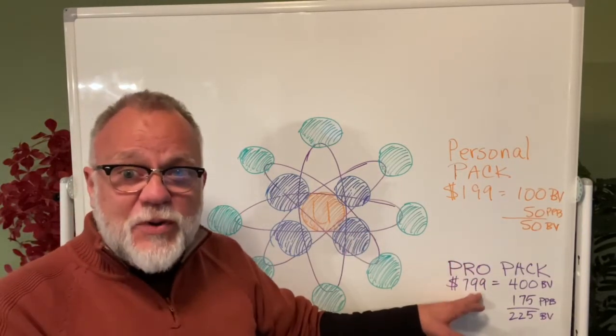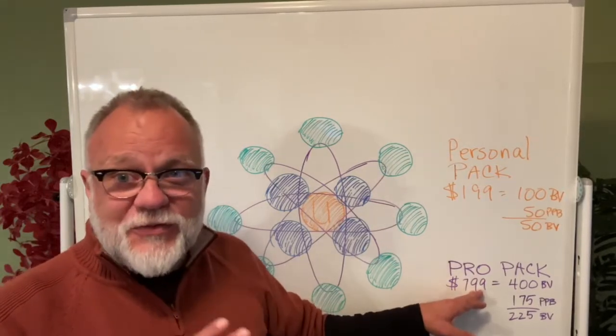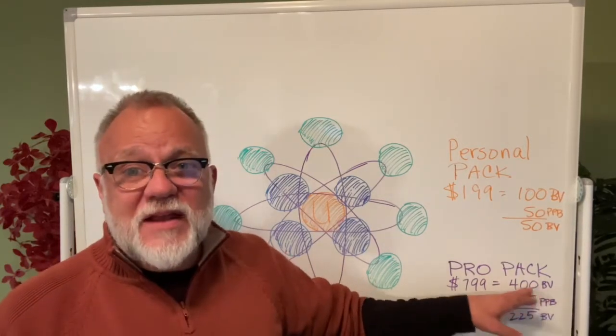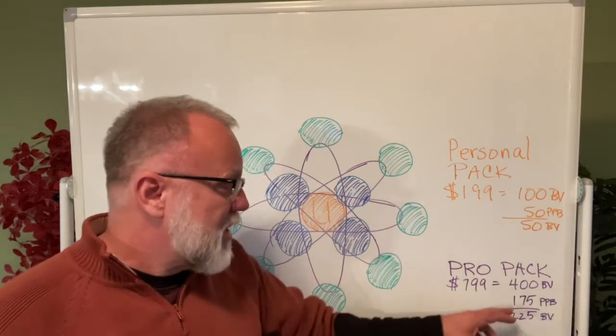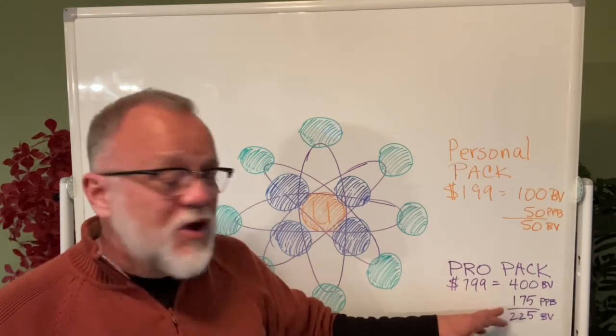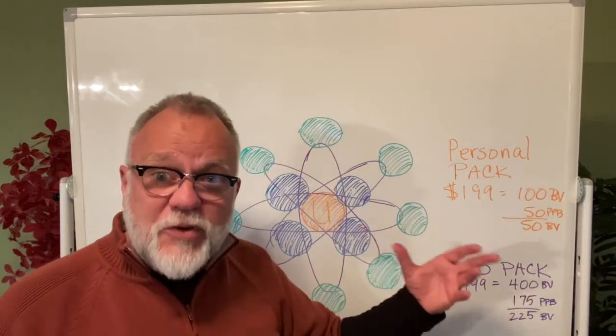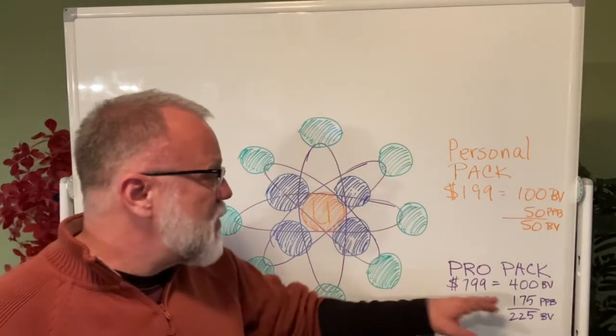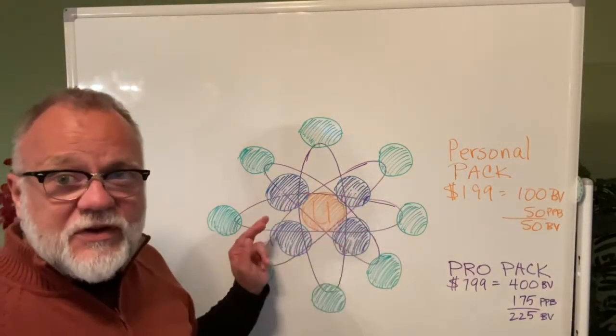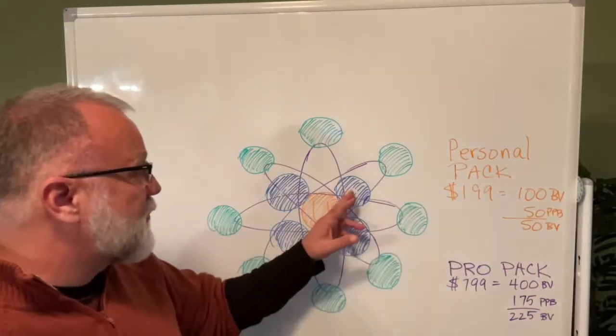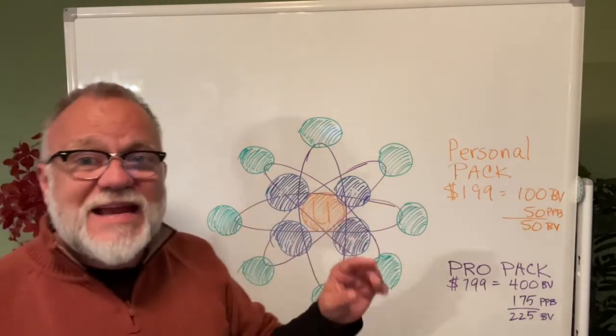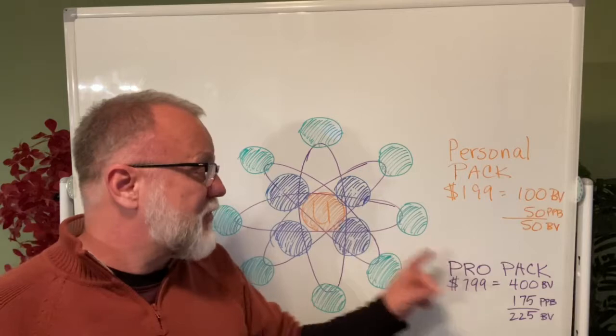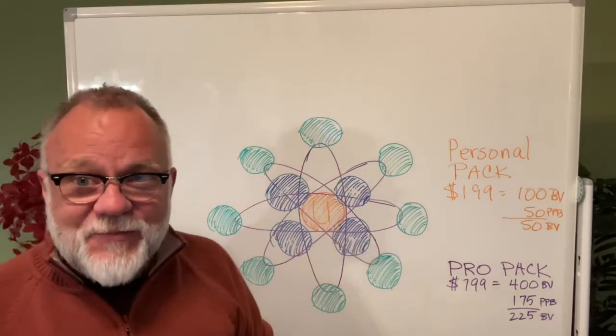The pro pack has $799. That's what you purchased. You get a very heavy discount, almost a $300 discount on the products when you purchase a pro pack. You have a $400 BV left in that to pay out into the plan. You, as the sponsor, are going to receive $175 PPB or promotional package bonus every time you sponsor someone at a pro pack. So if you have sponsored four individuals, just like you did with a personal pack, if you sponsor four individuals, you will have made $700 promotional package bonus just by sponsoring four individuals at pro pack. How powerful is that?